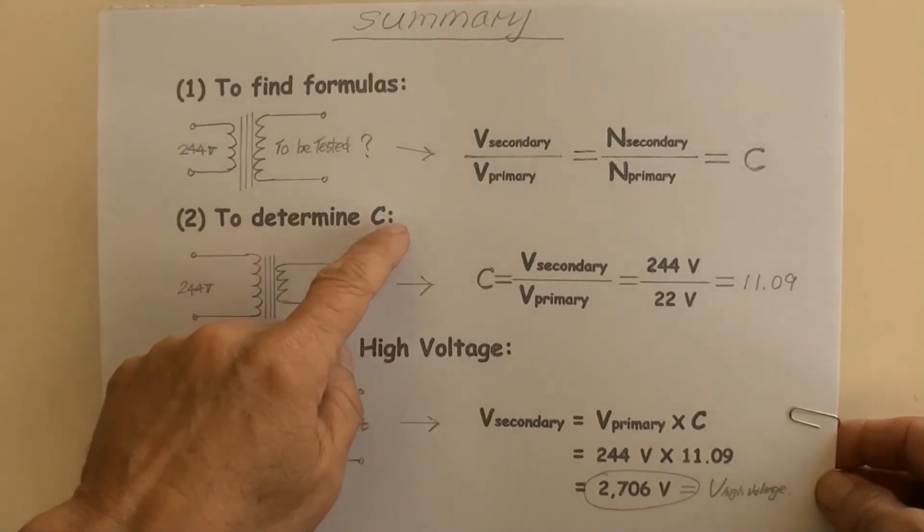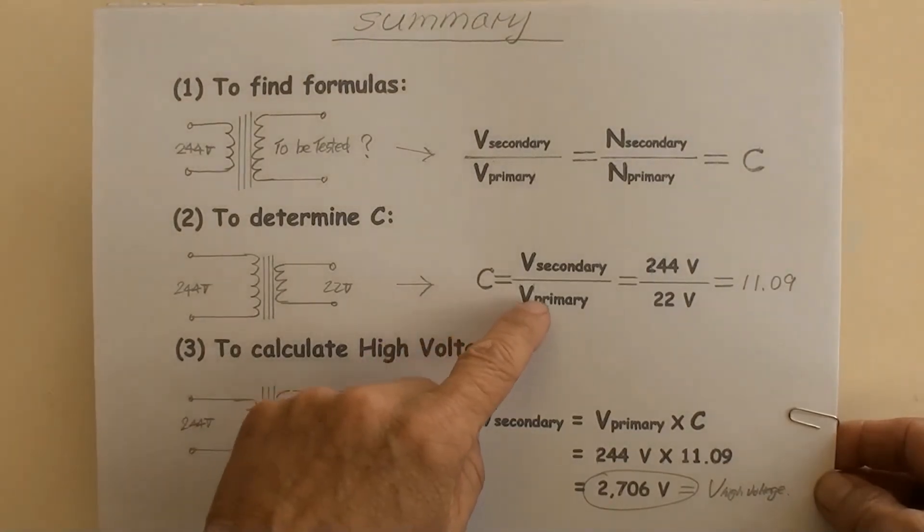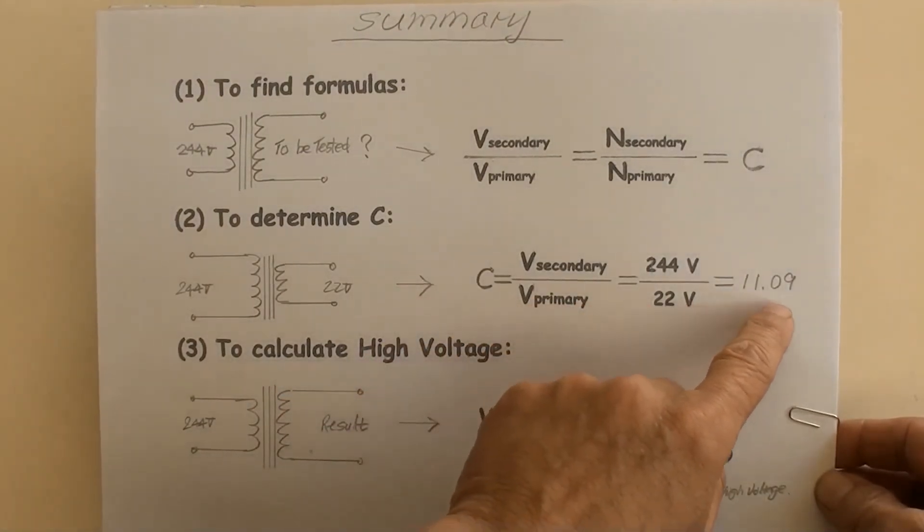Number 2: To determine C. C equals V secondary over V primary equals 244 volts over 22 volts equals 11.09.